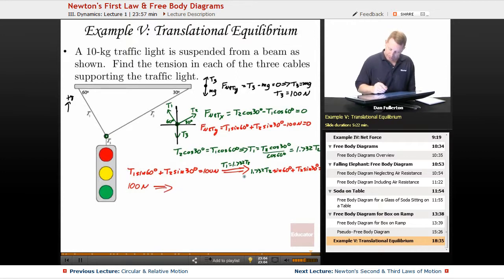Which implies then that when we do all that together I get 1.5 T2 plus 0.5 T2 equals 100 newtons. Therefore T2 must be equal to 50 newtons.